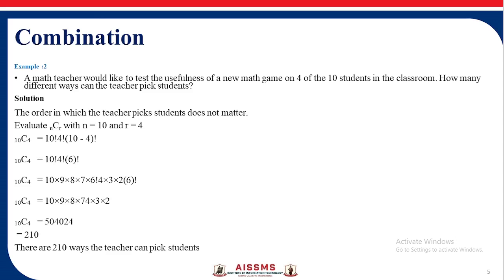So 10C4 equal to 10 factorial upon 4 factorial into 10 minus 4 factorial. So after solving this we get the result as 210. There are 210 ways the teacher can pick the students.